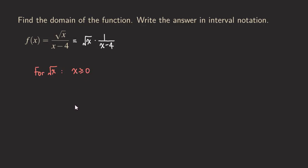And now for the other one, for the rational function, we have a linear expression in the denominator. What happens is that we can see easily that x should not be four, otherwise we'll be dividing by zero. So here we will have x is not equal to four.